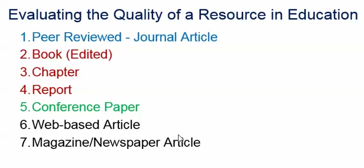There are no hard and fast rules here, so I'm just giving you a general idea of the quality associated with the following resources. Magazine and newspaper articles, as well as web-based articles — not web-based peer-reviewed articles, but just general web-based articles — are considered the least reliable or valid sources. They are meant to sell magazines, newspapers, or a particular product, and the people writing them are not researchers, so they're quoting from other sources. They might pick quotes that are more sensational and not necessarily representative of the research in general.